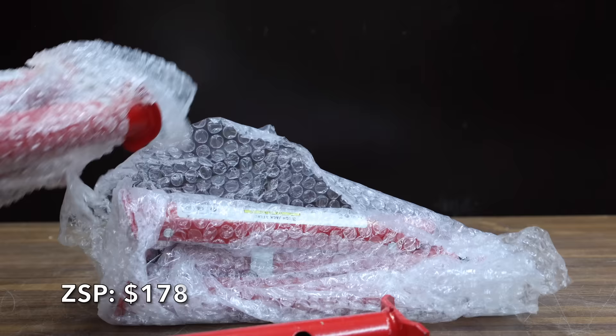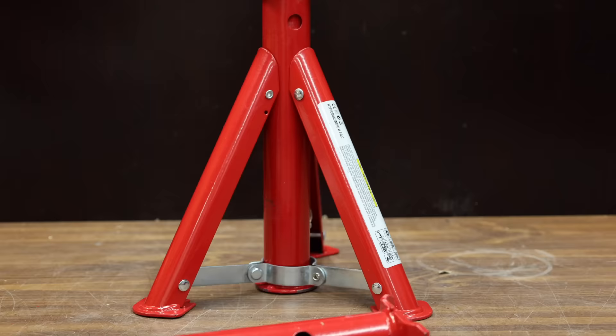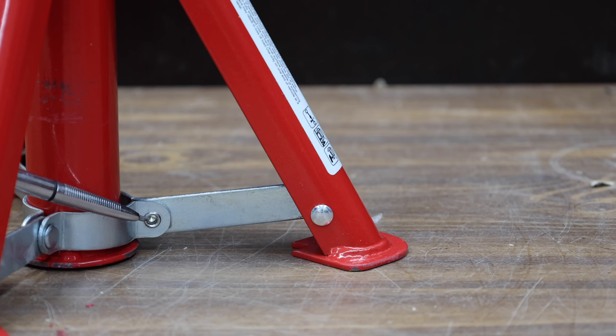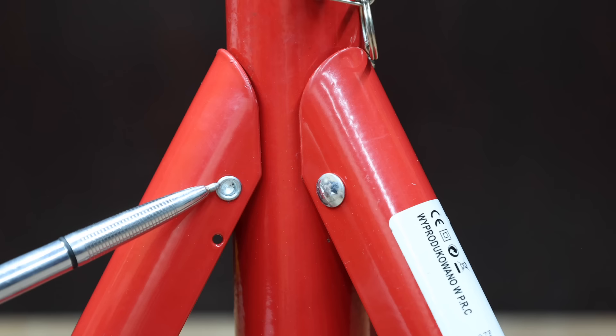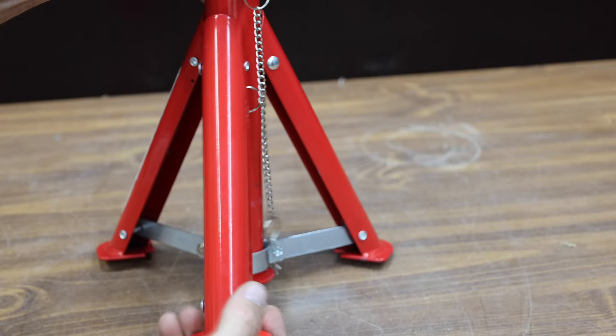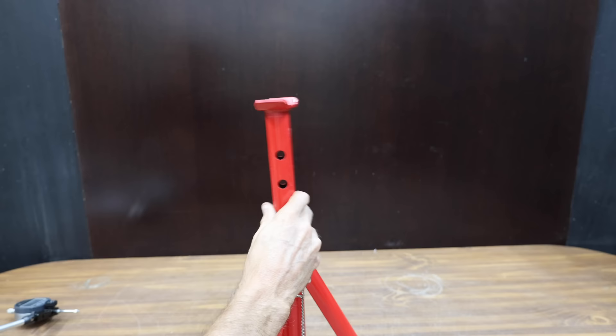The ZSP jack stands definitely earned a spot in the worst 10 products ever tested list. If you're ever crawling under a vehicle your safety and life depends on jack stands doing their job. The manufacturer claims that it's a six-ton adjustable performance car and truck jack stand. The manufacturer claims that this jack stand is as steady as a rock, and I'm not joking. These things look terrifyingly unsafe.